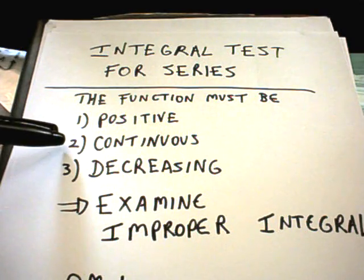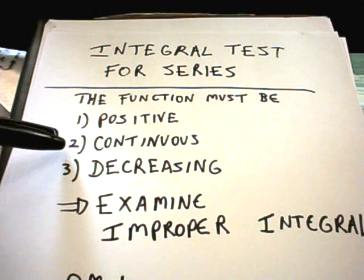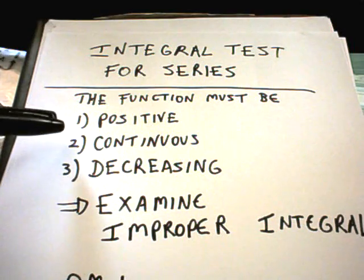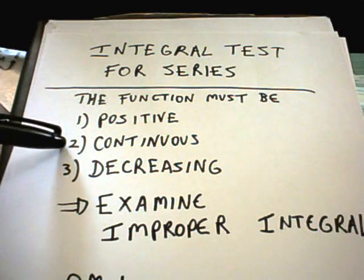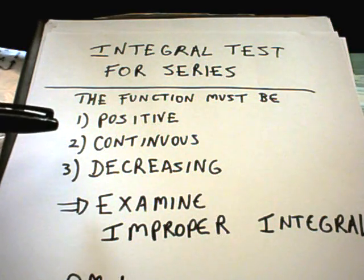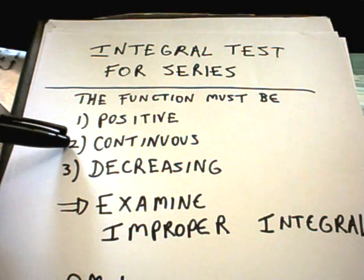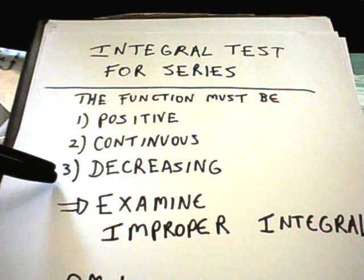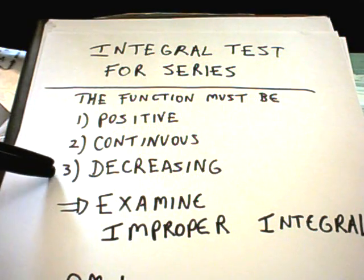Remember there's a limit definition for continuity, but we don't really need to use that. We can use the fact that polynomials are continuous on their domain, e to the x is continuous everywhere, the natural logarithm function is continuous on its domain, likewise for trig functions and rational functions. So we usually don't have to justify the positive and continuous properties too much.